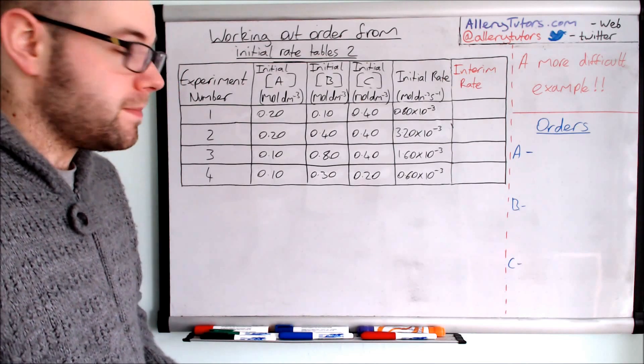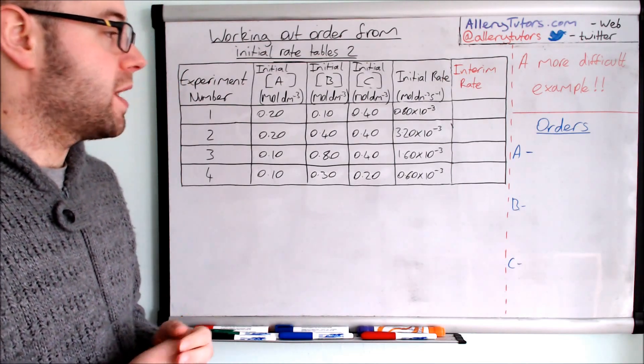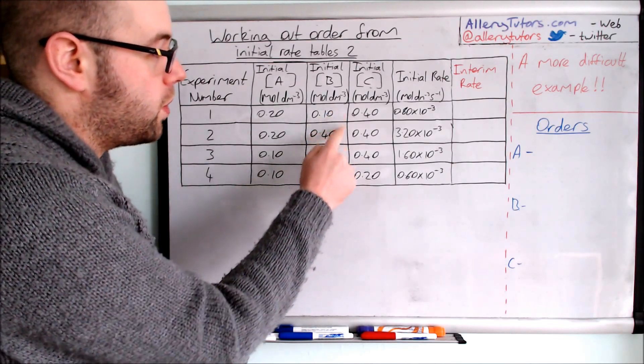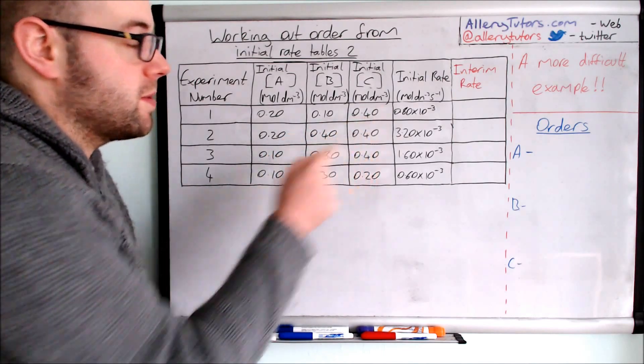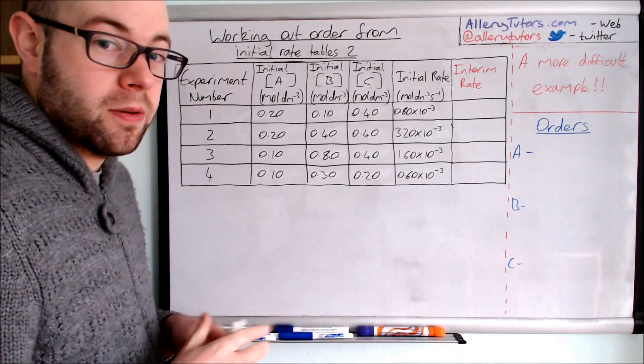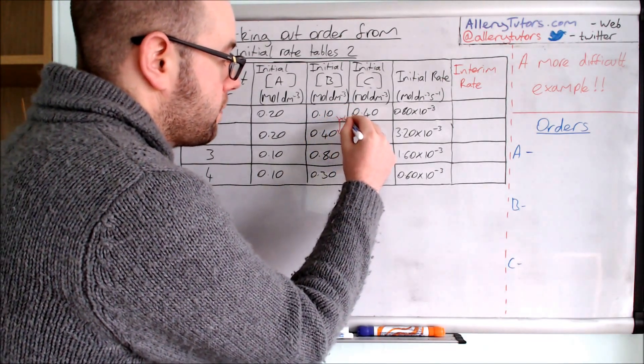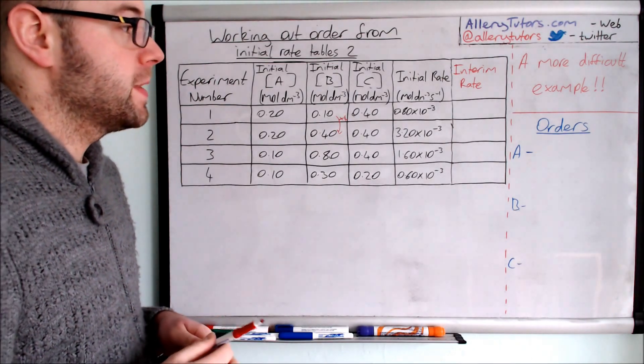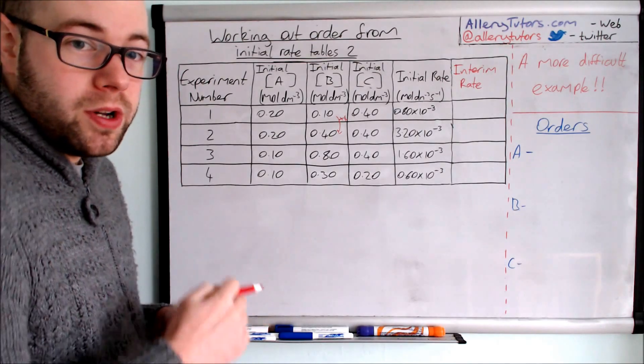We'll have a look at B. We're looking for a change in concentration for B but a fixed amount for the other two. You can see here we're going from 0.1 to 0.4, but luckily A is remaining the same and so is C. This one is actually increasing by four, by a factor of four, so we're multiplying it by four. Then we need to look at the rate and comment on what is the rate doing.